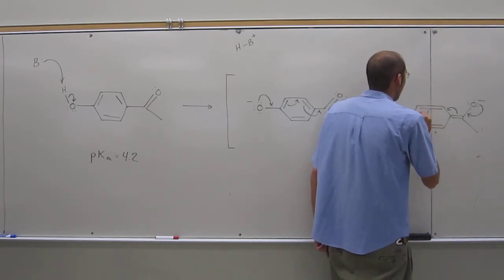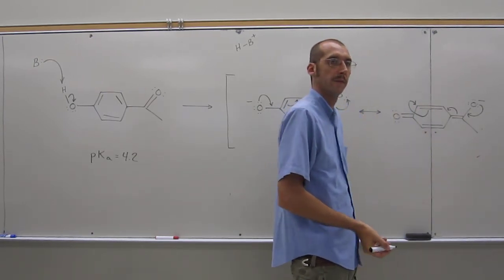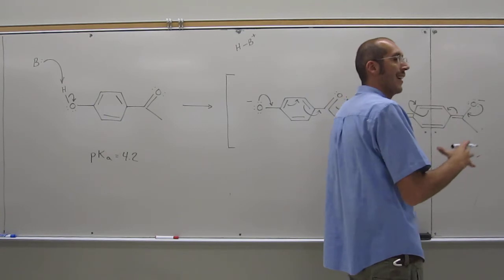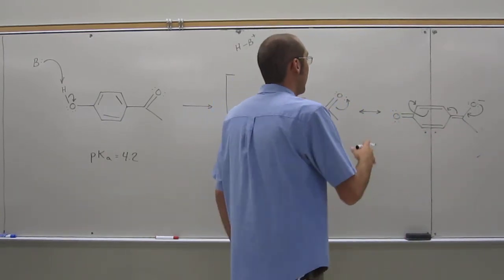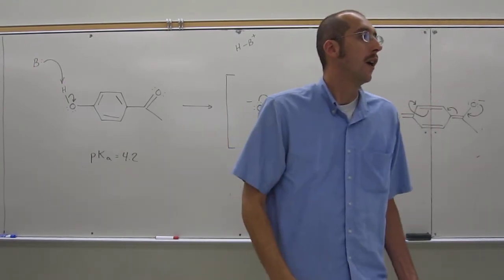And then I'll let you guys do all the other resonance forms on the ring. So we could take these electrons and put them right there. It's not the, like I said, the ideal resonance form, but it is a resonance form. And it is taking that negative charge and distributing on another atom.